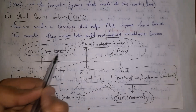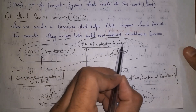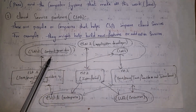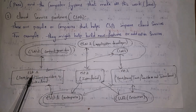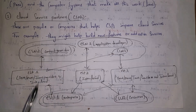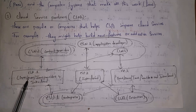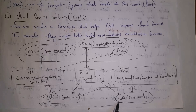Looking at the diagram, content providers and application developers are both cloud service partners — they improve new features and services in the cloud. Cloud service providers like Amazon AWS and Microsoft provide various kinds of services to cloud service users. These services can be Software as a Service, Platform as a Service, or Infrastructure as a Service. The cloud service user can be either a single person or an entire company.